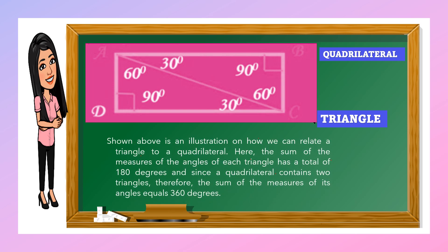Shown above is an illustration on how we can relate a triangle to a quadrilateral. The sum of the measures of the angles of each triangle has a total of 180 degrees.